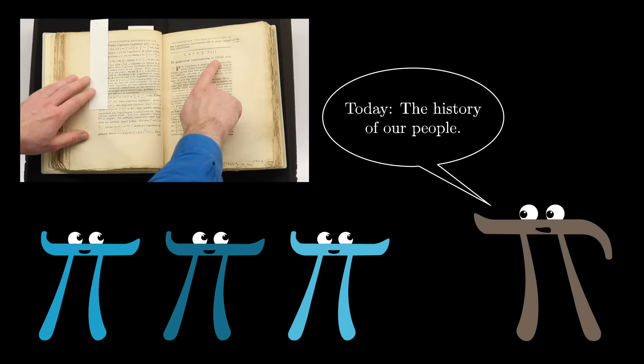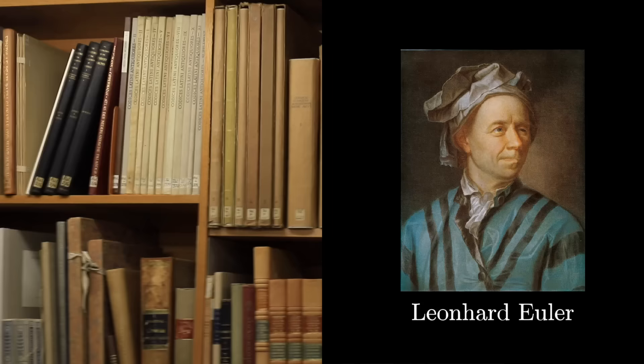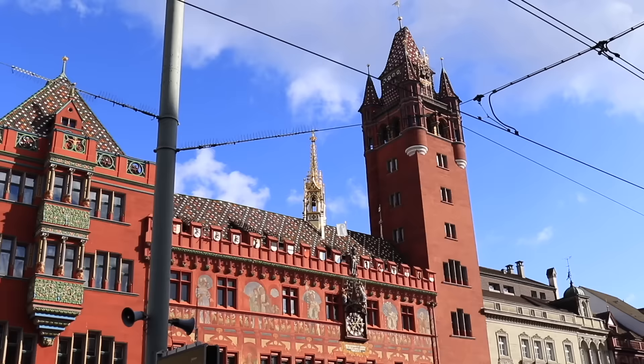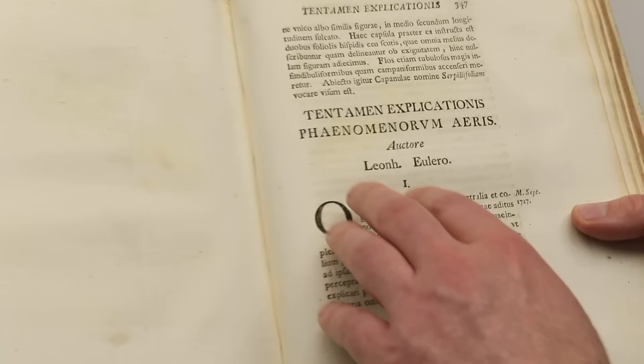Instead, I'd like to talk about the seminal moment in history when pi as we know it became the standard. For this, one fruitful place to look is at the old notes and letters by one of history's most influential mathematicians, Leonard Euler. Luckily, we now have an official 3blue1brown Switzerland correspondent, Ben Hambrecht, who was able to go to the library in Euler's hometown and get his hands on some of the original documents.